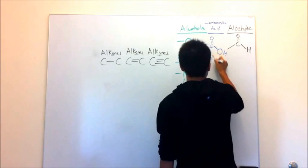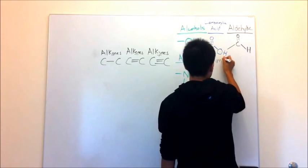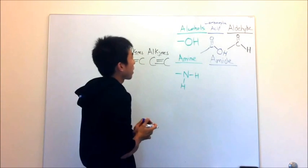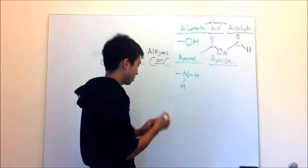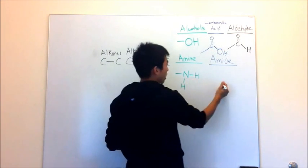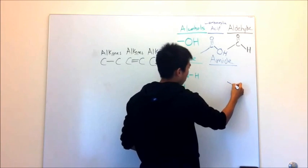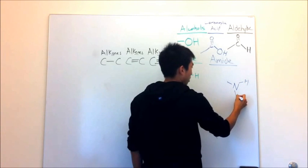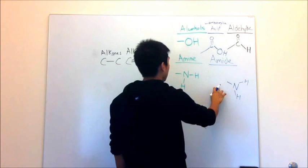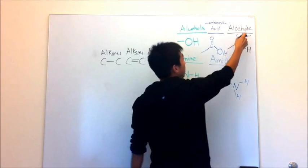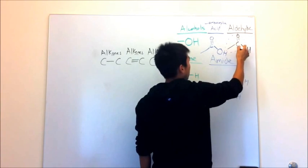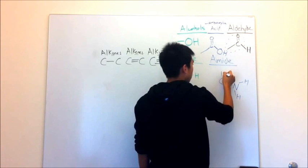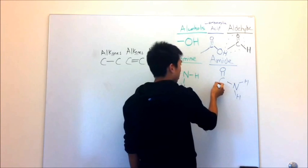Next is the amide. Once again, I go back to my aldehyde. Just like before, I'm going to draw the amine component — nitrogen, hydrogen, hydrogen. And then I bring back the carbonyl component of the aldehyde: here's my carbon with the double bonded O, and then here's my carbon chain.